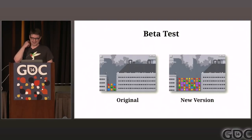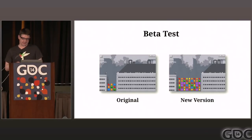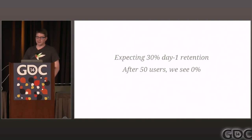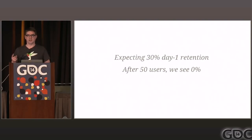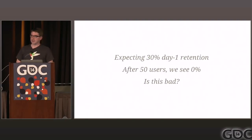So we start playing around with the gameplay and imagine we've made some gameplay change. There's an impact on the number of users who come back the second day. In this case, we were expecting 30% day-one retention, but we saw no users come back the next day — whatever we did with the game, we've completely destroyed it. The question at this point, after 50 users with none returning on day two, is: how bad is this? Is it enough information to say I should stop, revert the change? I'm going to ask that question from both a frequentist perspective and a Bayesian perspective.